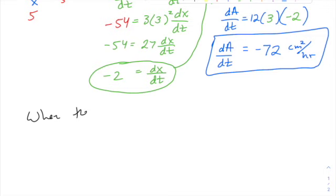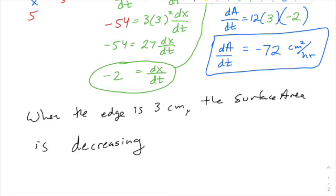So when the edge is 3 centimeters at that moment, the surface area - and it's a negative rate of change - so that would imply that the surface area is decreasing, which makes sense because it's melting. The cube is getting smaller. The surface area is decreasing.